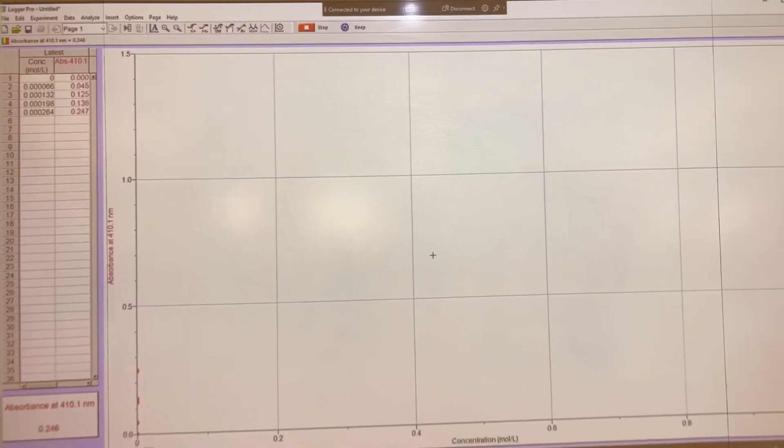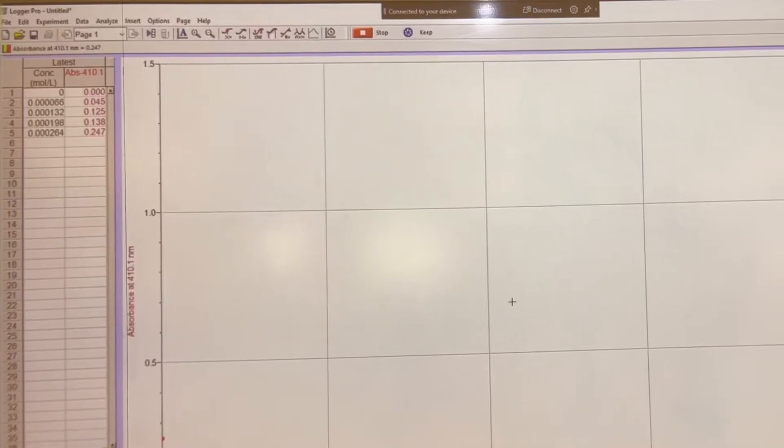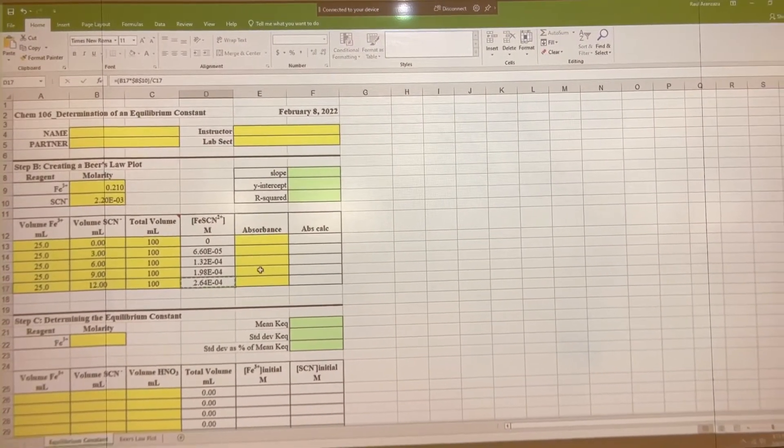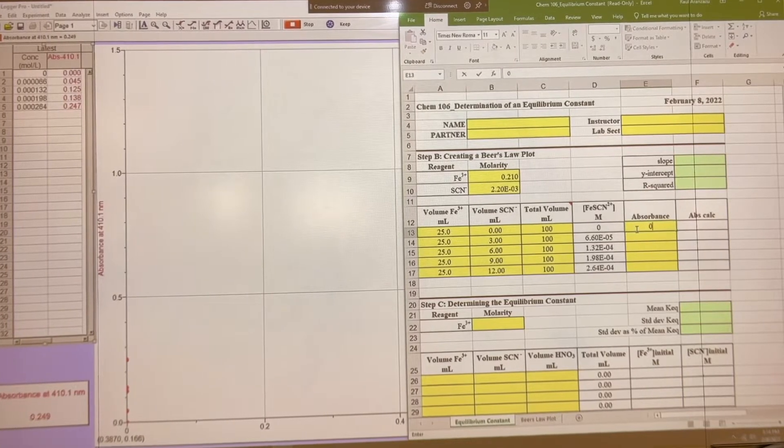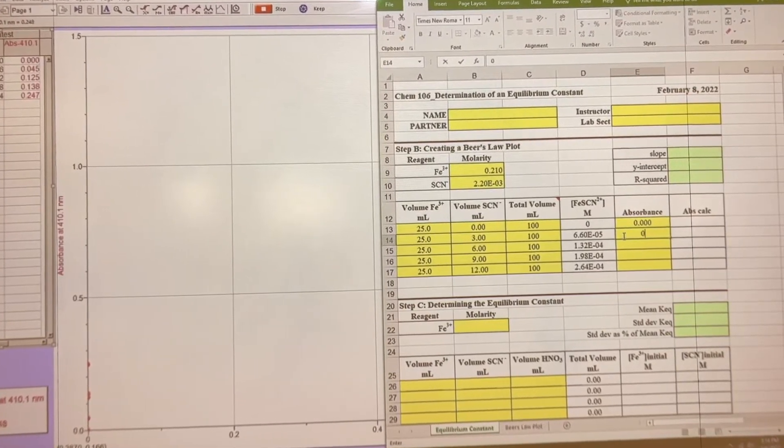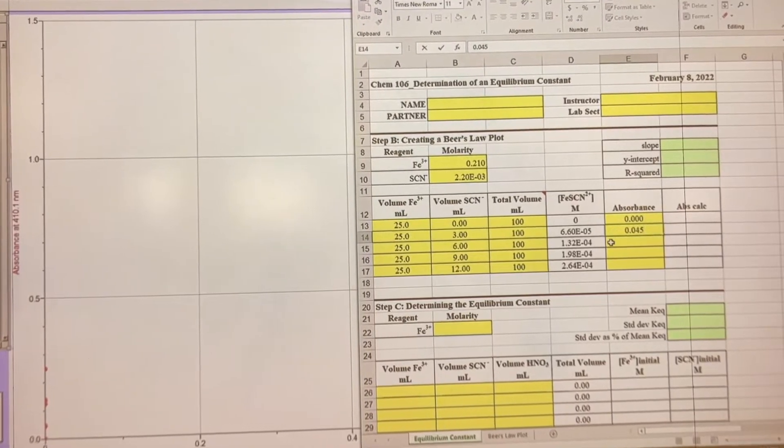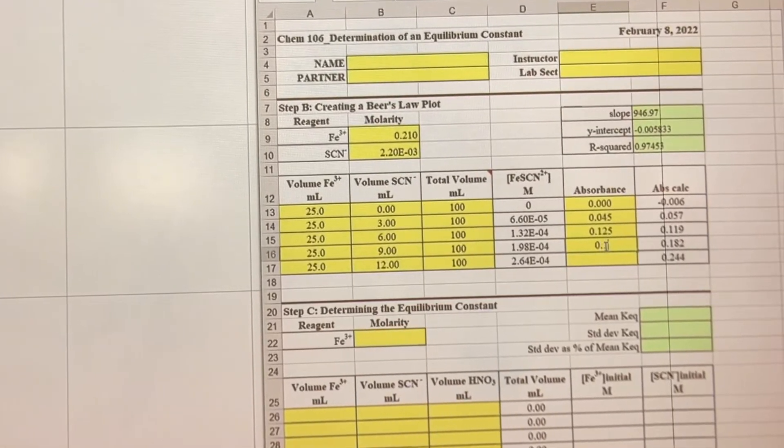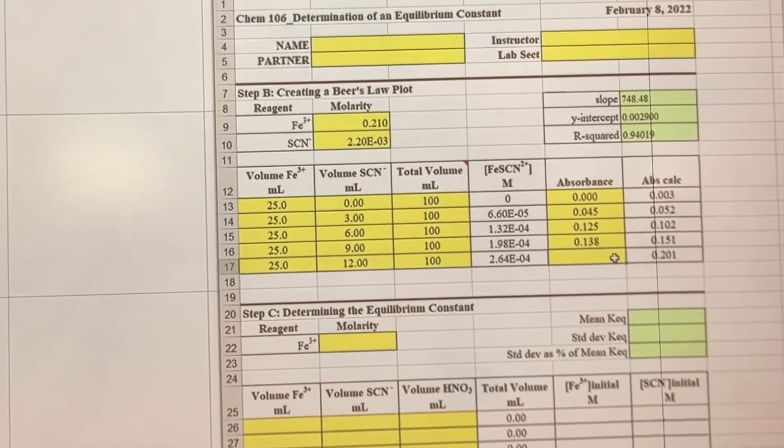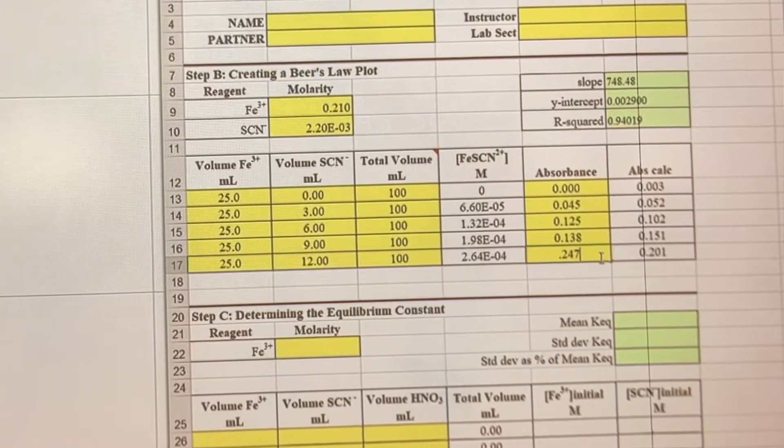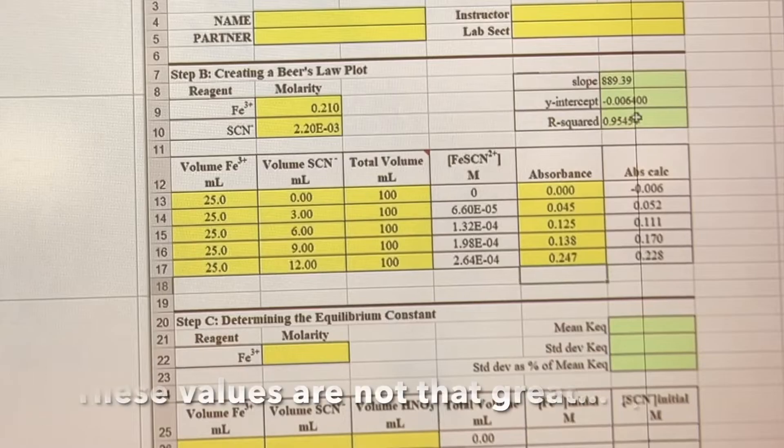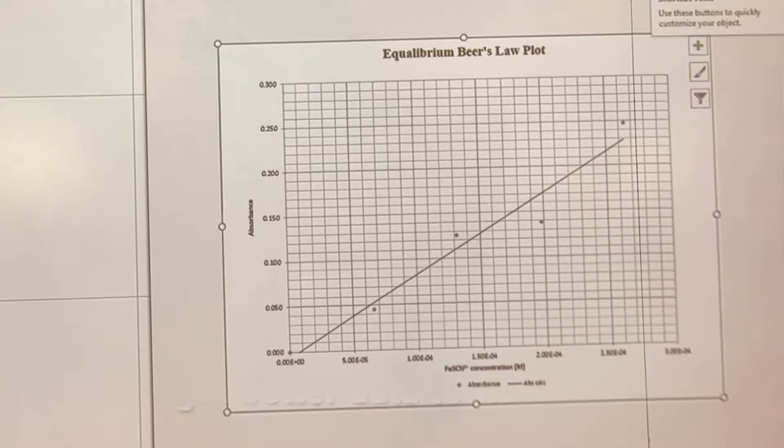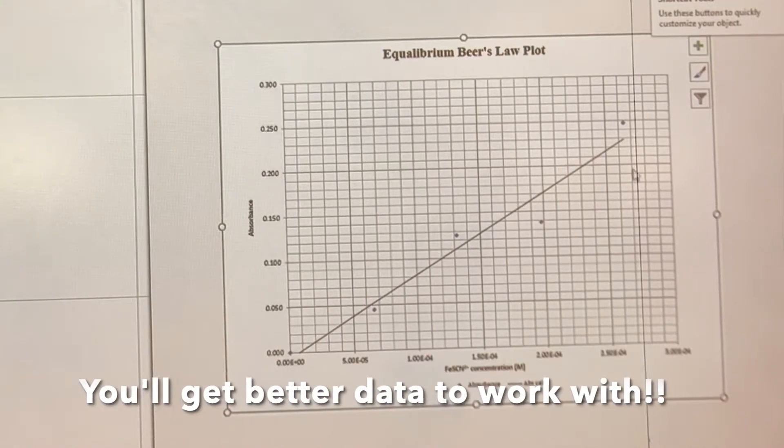Now that we're done with that, we got all five readings. Essentially what we want to do is copy over what the absorbance values were for each one of those. So we go 0, that next one was 0.045, 0.125, 0.138, and 0.247. Our r squared is 0.95. That looks pretty good. And that is our Beer's Law Plot. It's not perfect, but not too bad.